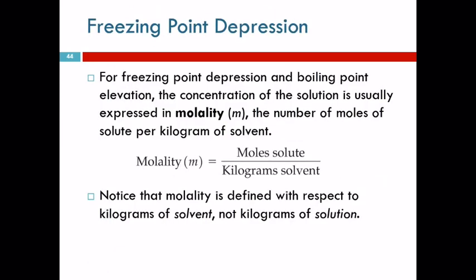The freezing point depression and boiling point elevation calculations are usually done using a unit called molality, the number of moles of solute per kilogram of solvent. Solvent, not solution. Most of the other things we've been doing have been solution, this is solvent. The reason that we use molality for these concentrations is that molarity depends on temperature. The volume of a solution will change with temperature. The mass of a solvent doesn't change.